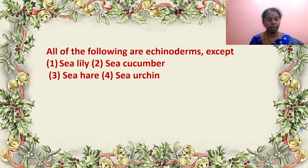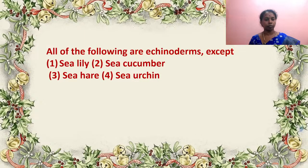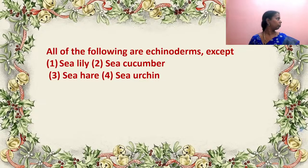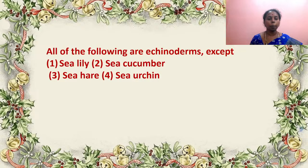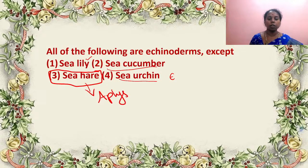All of the following are echinoderms except what? All options are starting with C — think which is not an echinoderm. It is sea hare — Aplysia — which is not an echinoderm; it is of course a mollusk. Sea lily you know is in anthodon; sea cucumber is Cucumaria; sea urchin is Echinus.